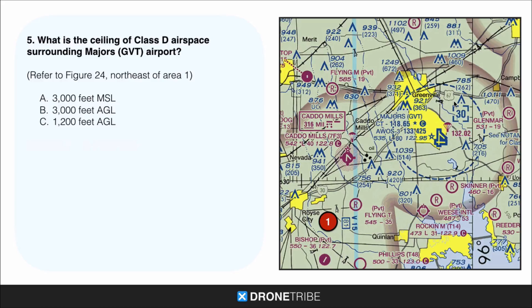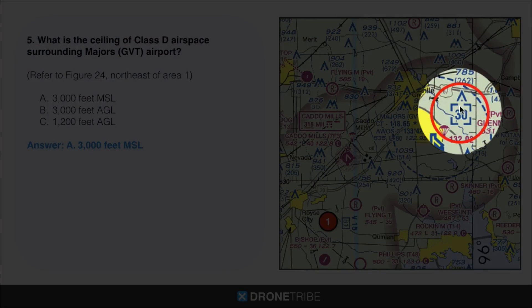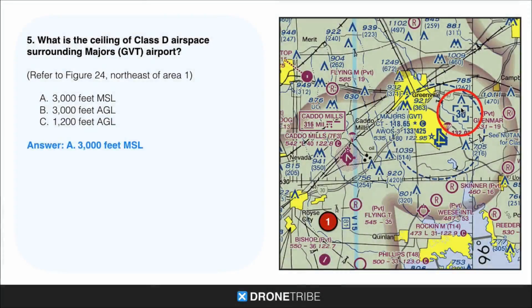For question 5: what is the ceiling of the Class D Delta airspace surrounding Majors Airport? Referring to Figure 24, Northeast Area 1, we can see the dashed blue line indicating Delta airspace. Within that is a symbol indicating the ceiling of the Delta airspace. In this case, it's going to be 3,000 feet MSL.